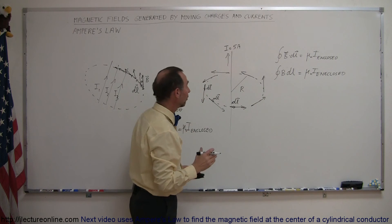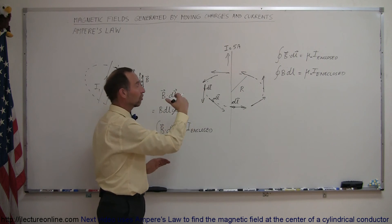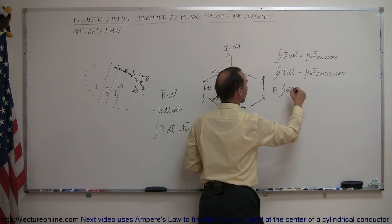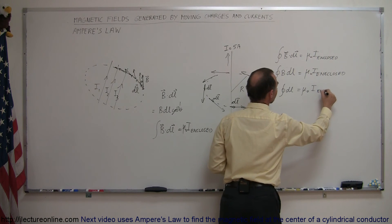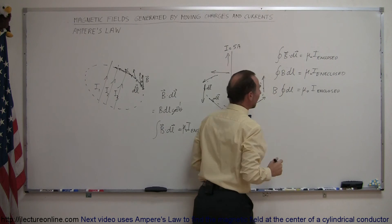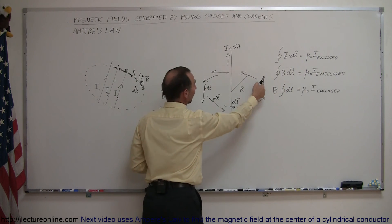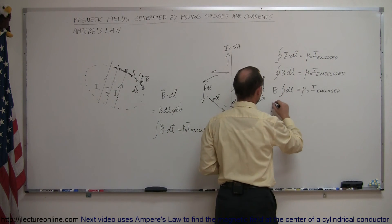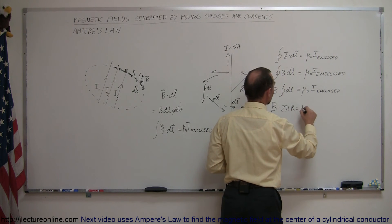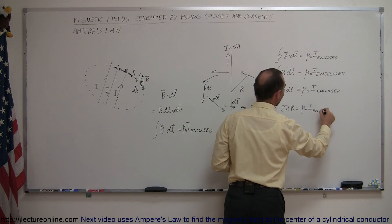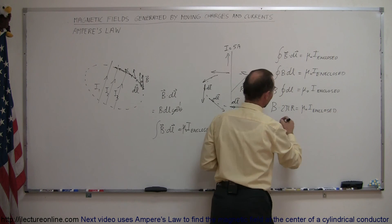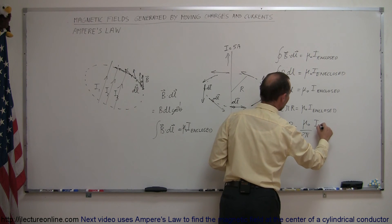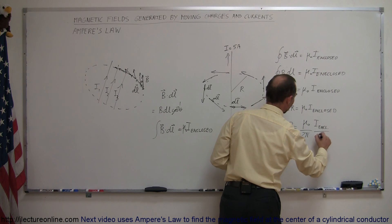Since the B field magnitude doesn't change anywhere along that circle, we can take it outside the integral sign: B times the integral of dl all the way around the circle equals mu sub naught times I enclosed. The integral of dl all the way around the circle is simply the circumference, so that's B times 2πr equals mu sub naught times I enclosed. Isolating for B, we get B equals mu sub naught divided by 2π times I enclosed divided by the radius r.